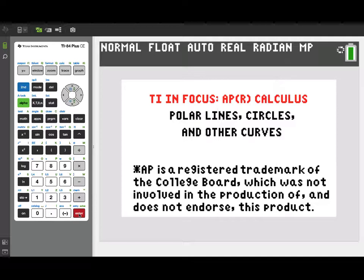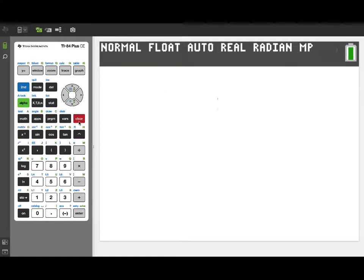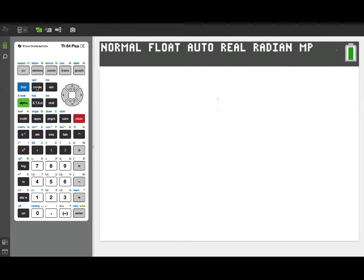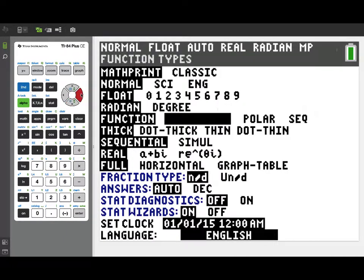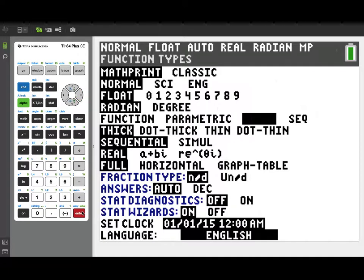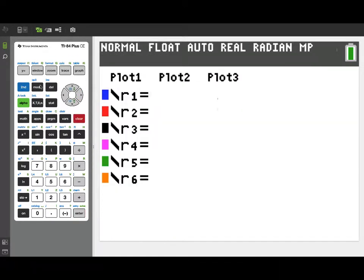We're going to be using the 2019 BC exam question 2 to look at polar curves on the TI-84. Let's get started by changing our mode, graphing mode, from function, which we're usually on, to polar. Once I've made that change under mode, I'm ready to go to my y equals menu, which is now an r equals menu.